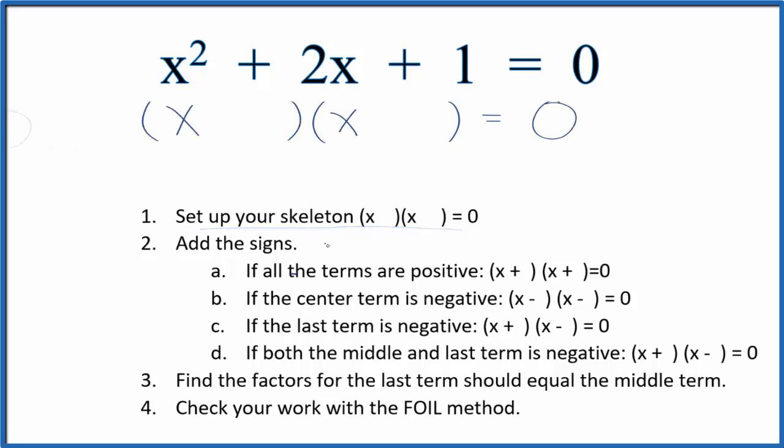Next we can add in the signs. If we look at our equation we have a positive here and a positive here. When both of the terms are positive, put a positive and a positive in our skeleton equation.